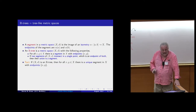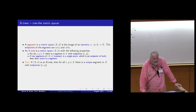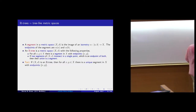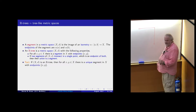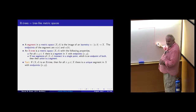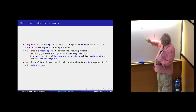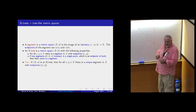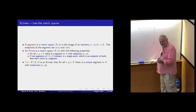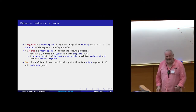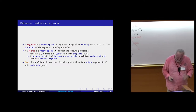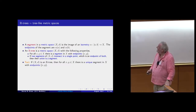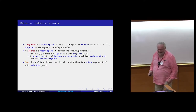A question arises: is it true in any space that if two segments intersect in an endpoint their union is again a segment? Here's a counterexample: two segments in the plane at an angle — that's not an isometric map from an interval. It's very important that the map is distance-preserving, not merely a homeomorphism.